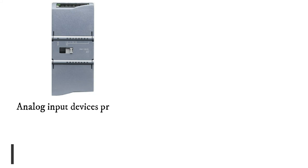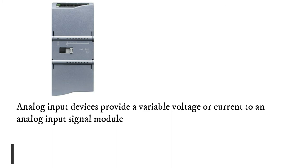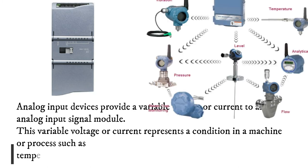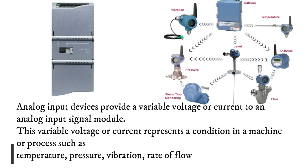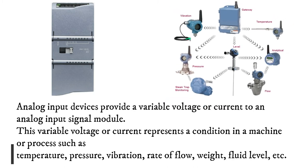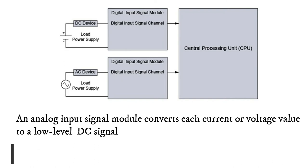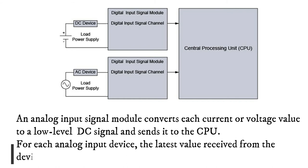Analog input devices provide a variable voltage or current to an analog input signal module. This variable voltage or current represents a condition in a machine or process such as temperature, pressure, vibration, rate of flow, weight, fluid level, etc. An analog input signal module converts each current or voltage value to a low-level DC signal and sends it to the CPU. For each analog input device, the latest value received from the device is stored as a number in the CPU.